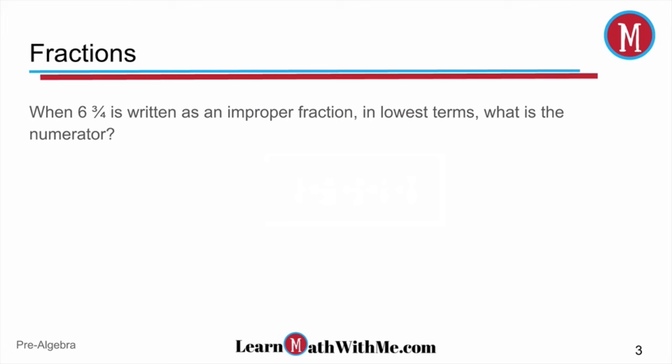Now let's look at the next problem. When 6 and 3 fourths is written as an improper fraction in lowest terms, what is the numerator?